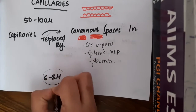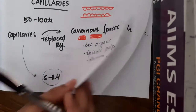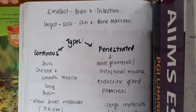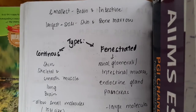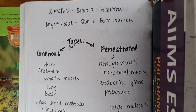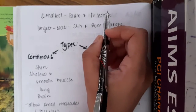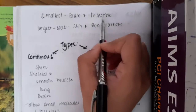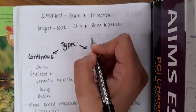The diameter of a capillary is 6 to 8 microns, which permits red blood cells to pass one by one as a single file. There are some areas where the capillary diameter is smallest, which is in the brain and intestine.